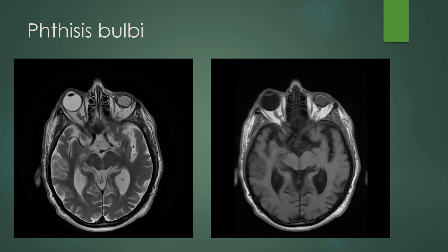Phthisis bulbi refers to an end-stage globe — a globe that no longer functions. It is smaller than the normal globe. On CT it can contain internal calcifications. In this case it contains hyperintense T1 and T2 signal material filling where the vitreous used to be. It is a small, shriveled-up globe, and you can see atrophy of the optic nerve to go with the nonfunctioning globe.